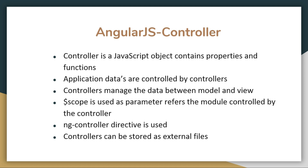A function is the declaration of a function — for example, an alert message. We use properties to hold values. Application data is controlled by the controller. All the data in the view can be controlled. The decision of how to reach the model is controlled by the controller — that is why application data is controlled by the controller.